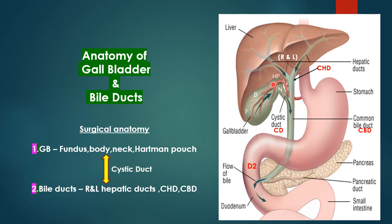This is the gallbladder — fundus, body, Hartmann's pouch, and the neck. This is the cystic duct, which connects the gallbladder to the biliary ducts. The right and left hepatic ducts join to form the common hepatic duct, which in turn joins by the cystic duct to form the common bile duct. The common bile duct goes downwards and to the right to enter the second part of the duodenum.